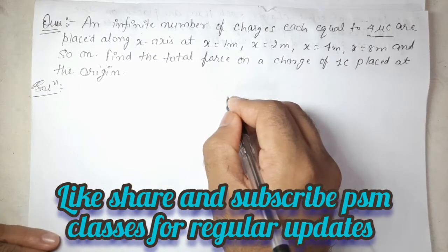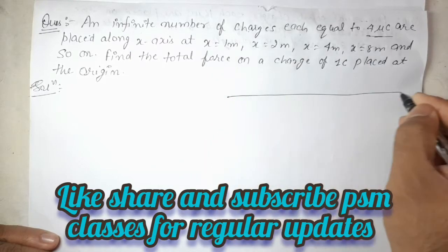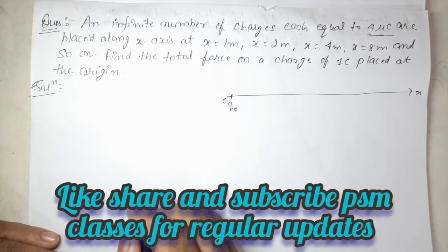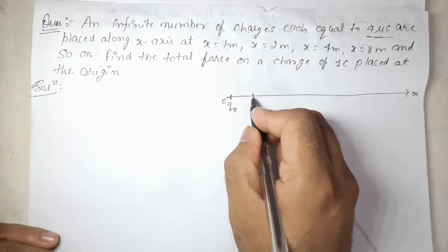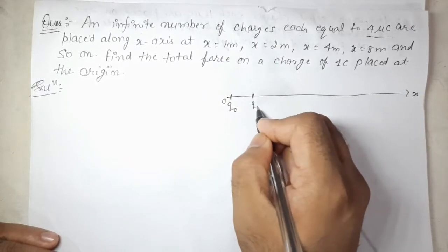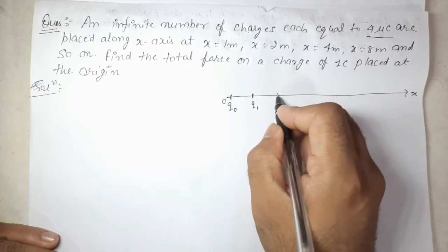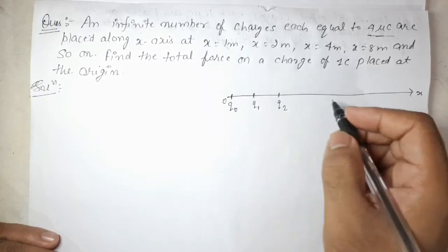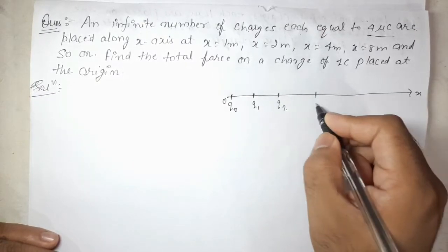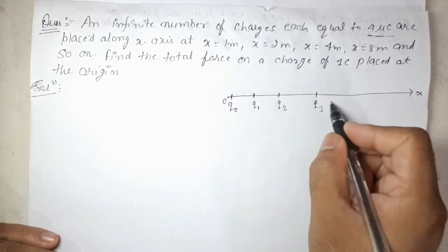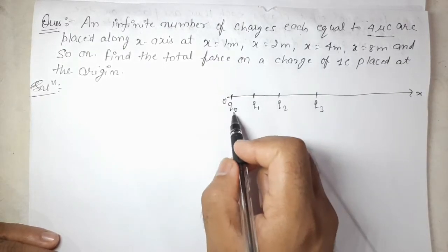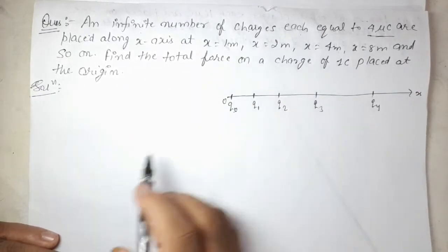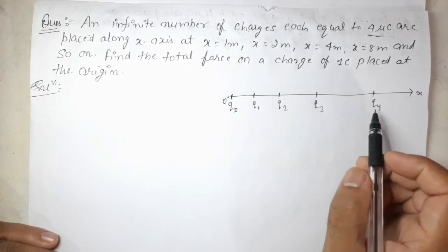So in this question, we have an x-axis with origin O, where charge Q0 is placed. At 1 meter distance from the origin there is another charge Q1 with 4 micro-coulomb. Then at 2 meter distance there is a third charge. Similarly, Q3 is 4 meters apart from Q0, and Q4 is 8 meters away. In this way we have an infinite number of charges.